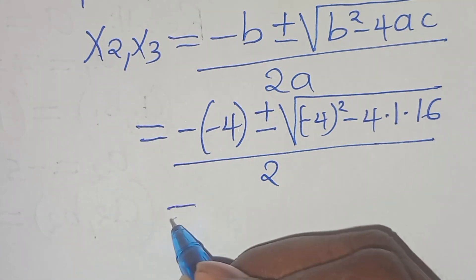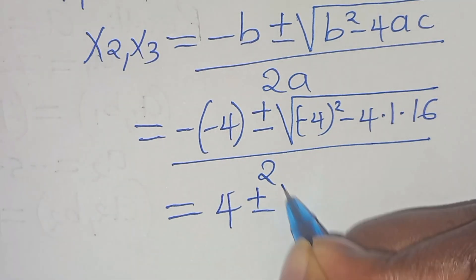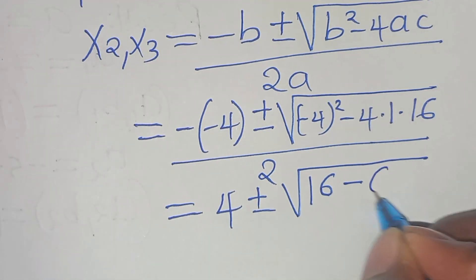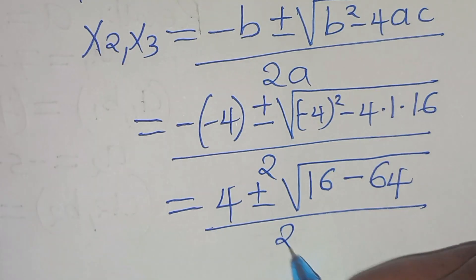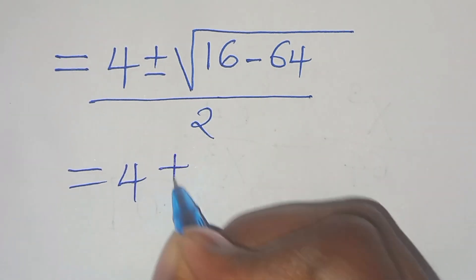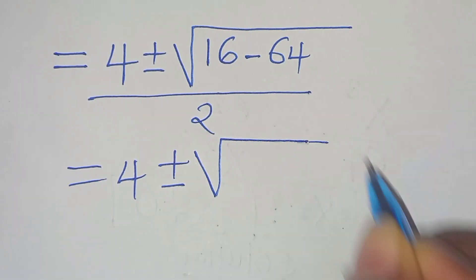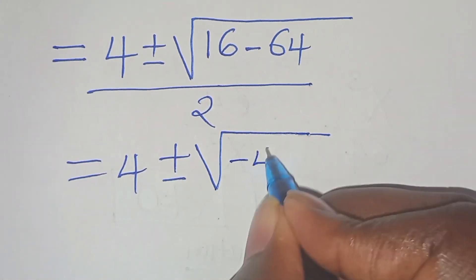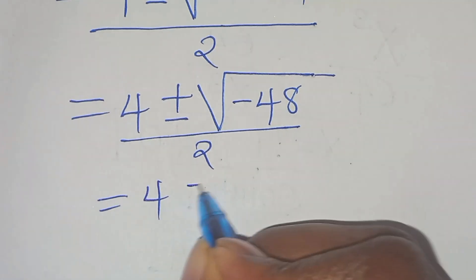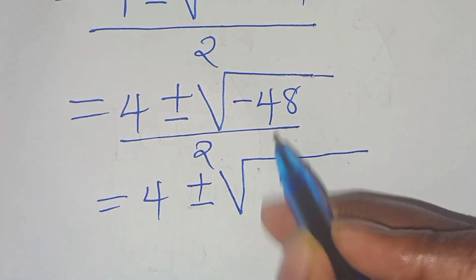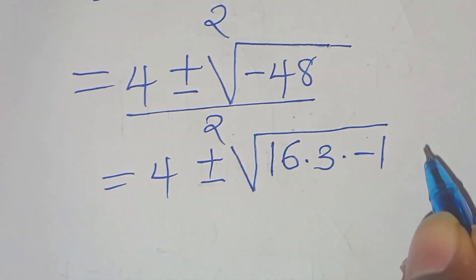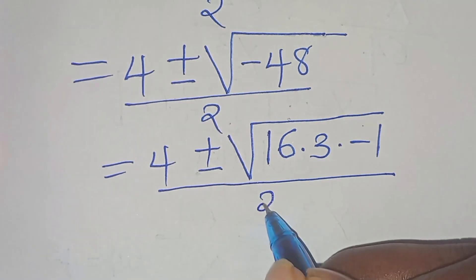This gives us 4, plus or minus the square root of 16 minus 64, which is minus 48, divided by 2. We can express the square root of minus 48 as the square root of 16 times 3 times minus 1, divided by 2.